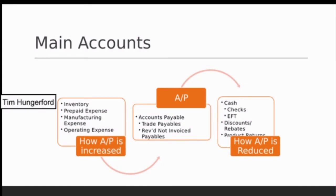The main account in the payment cycle is accounts payable. Things flow into payables when we buy inventory, insurance paid in advance, operating supplies, selling and administrative items, or manufacturing overhead items. All these things are acquired through the purchase order process, and when they're received they create an accounts payable owed to a vendor.